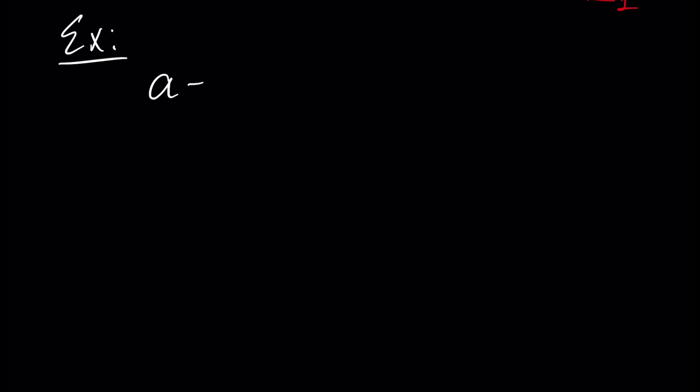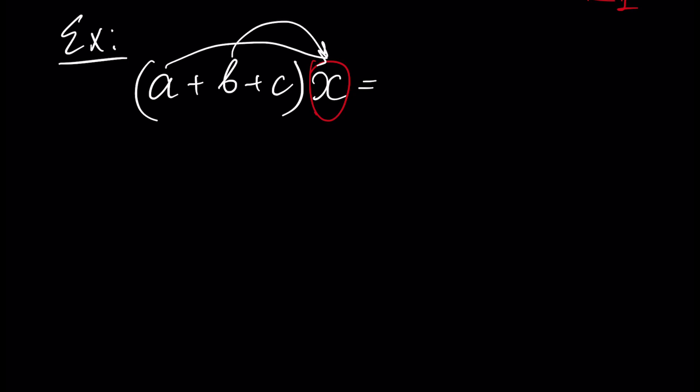Next example: assume we have a plus b plus c, and this polynomial is multiplied by another polynomial which is just one monomial: x. We multiply a, b, and c each by x, so we have three multiplications, giving us ax plus bx plus cx.